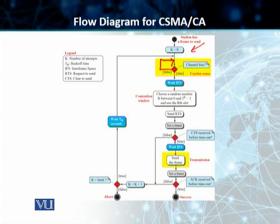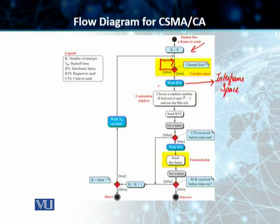Once the channel is found free, it then waits for a particular amount of time called the Interframe Space (IFS). This IFS is when the station checks the medium and if the medium is found idle, the station waits for a fixed amount of time equal to IFS. Although the medium is idle, if the station wants to send data immediately, it still waits for an additional period equal to IFS before it sends.